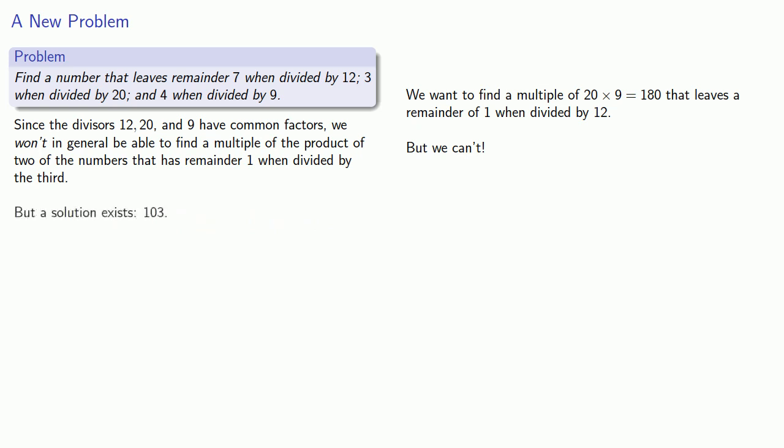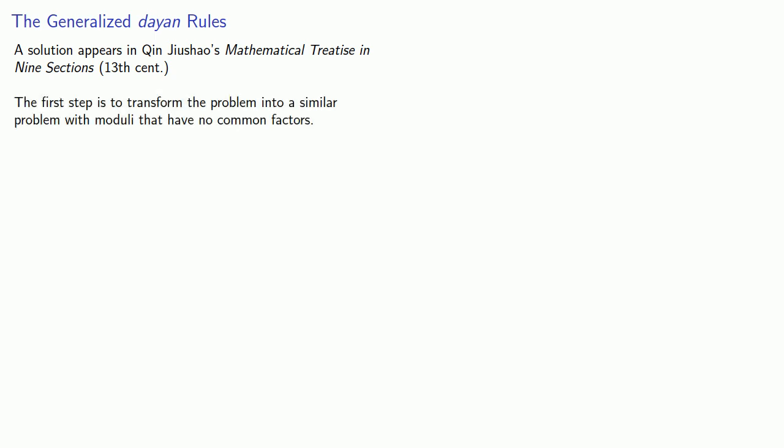But a solution definitely exists: 103. So what can we do? This leads to what are sometimes called the Generalized Dayan Rules. A solution to problems of this type appeared in Chen Jixiao's Mathematical Treatise in the Nine Sections, written around the 13th century. The first step is to transform the problem into a similar problem with moduli that have no common factors.